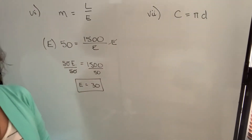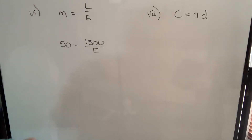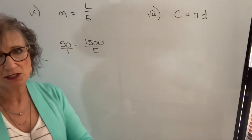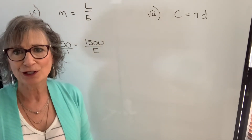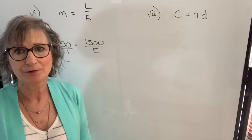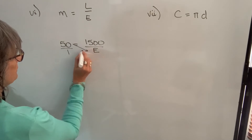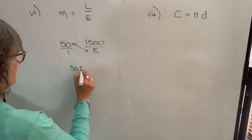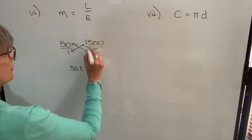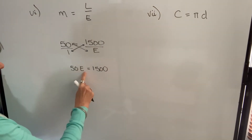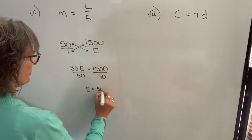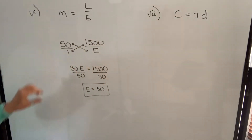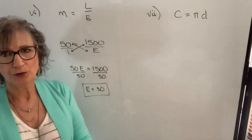There's also another approach. You can write 50 as 50 over 1 — which actually reflects what mechanical advantage means: you can lift 50 pounds of load for every 1 pound of effort. When you have two fractions equal to each other, you can cross-multiply across the diagonal: 50 times E equals 1 times 1500. Then divide both sides by 50 to get E equals 30. You may find cross-multiplying easier.